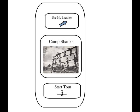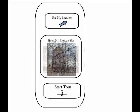Our app will begin with the top ten most visited historical markers, including Camp Shanks, a World War II staging area, and the treason site where Benedict Arnold plotted the surrender of West Point with Britain.